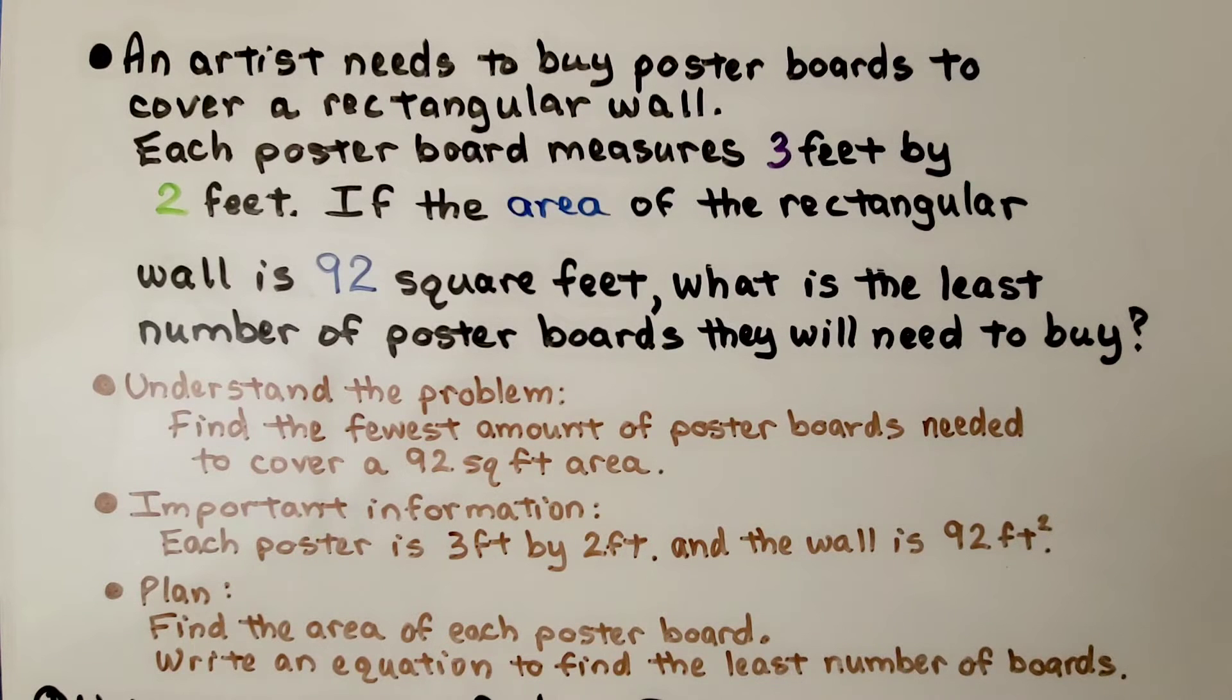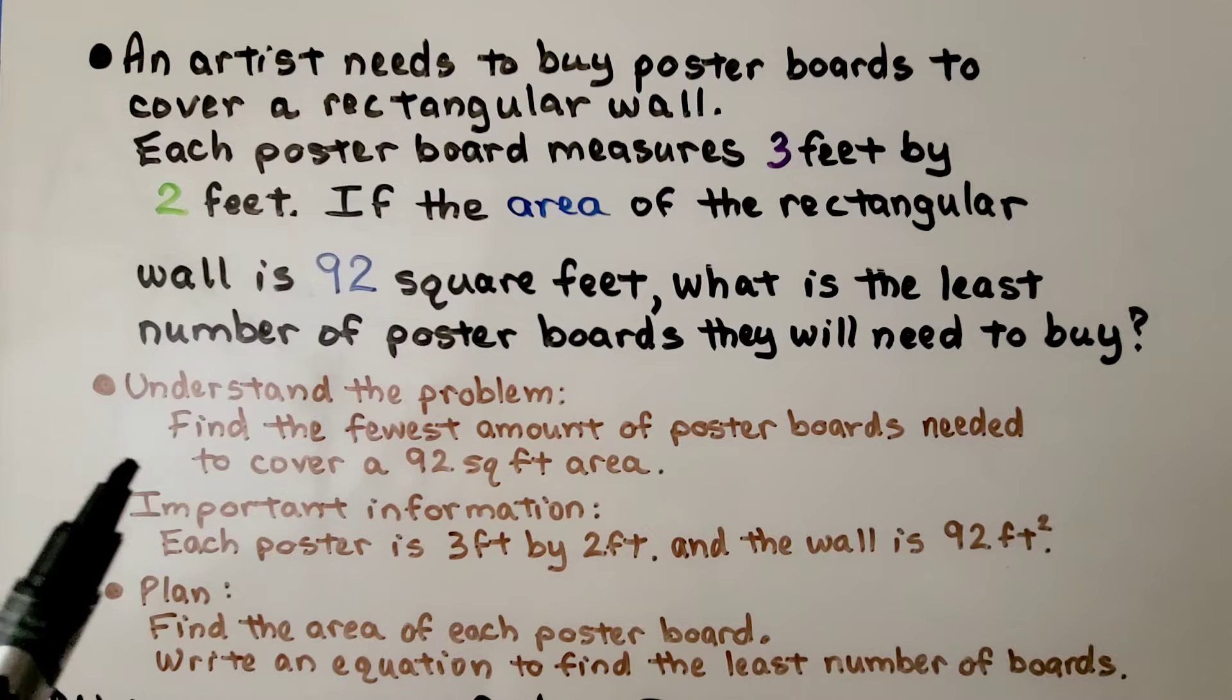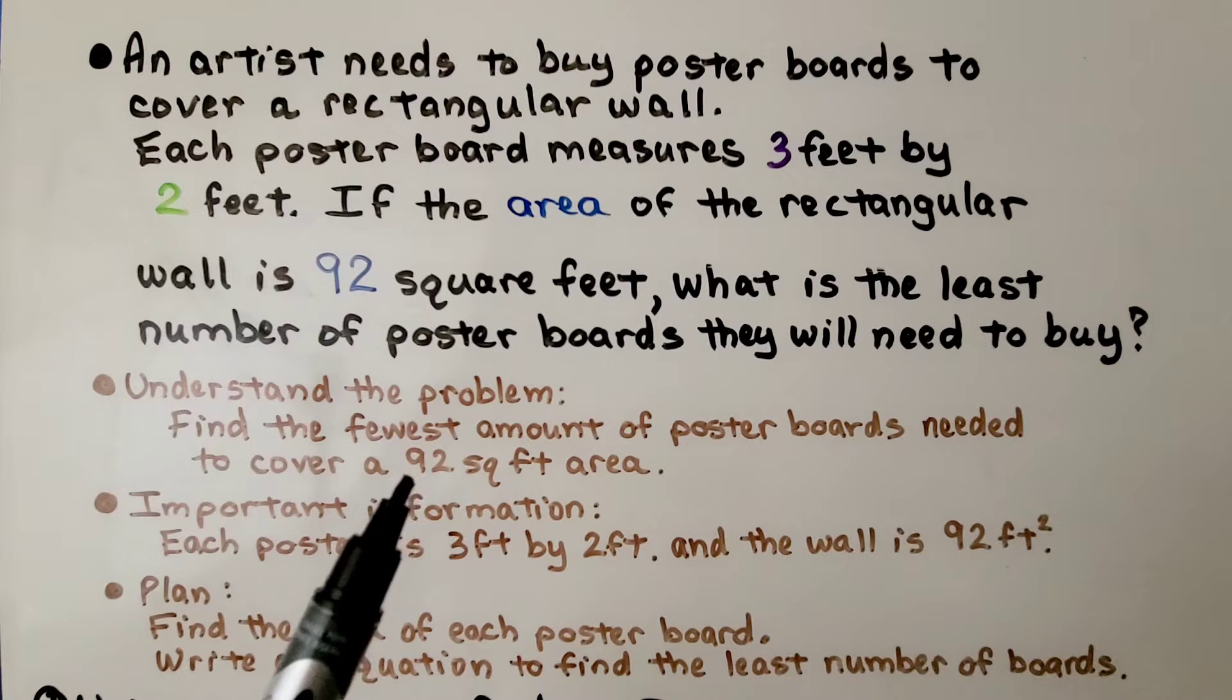An artist needs to buy poster boards to cover a rectangular wall, and each poster board measures 3 feet by 2 feet. If the area of the rectangular wall is 92 square feet, what is the least number of poster boards they'll need to buy? So the first thing we do is try to understand the problem. We need to figure out the fewest amount of poster boards that are needed to cover a 92 square foot area.